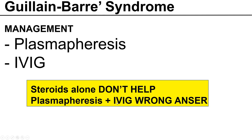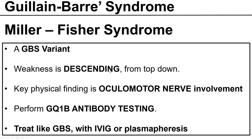Here is a variant of Guillain-Barré syndrome called Miller-Fisher syndrome. It's a GBS variant where weakness is descending rather than ascending — from the top down. Usually in the very initial phases, the oculomotor nerve is involved, beginning from the superior end of the body and moving down. GQ1B antibody testing is the right diagnostic test for Miller-Fisher syndrome, and it is treated like GBS with either IVIG or plasmapheresis.